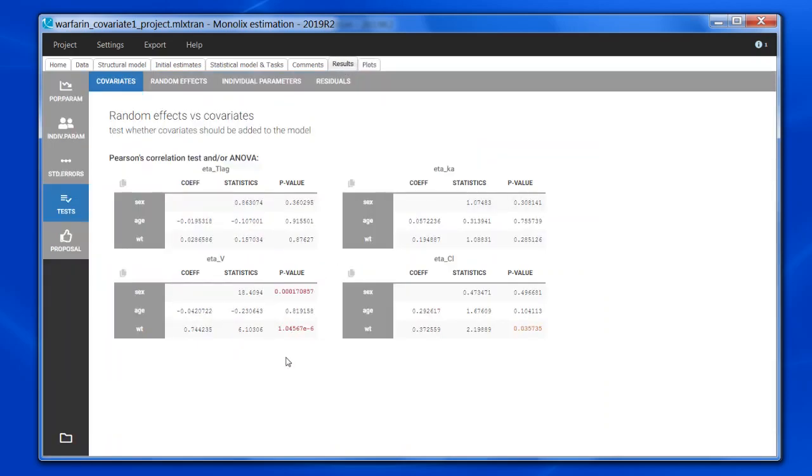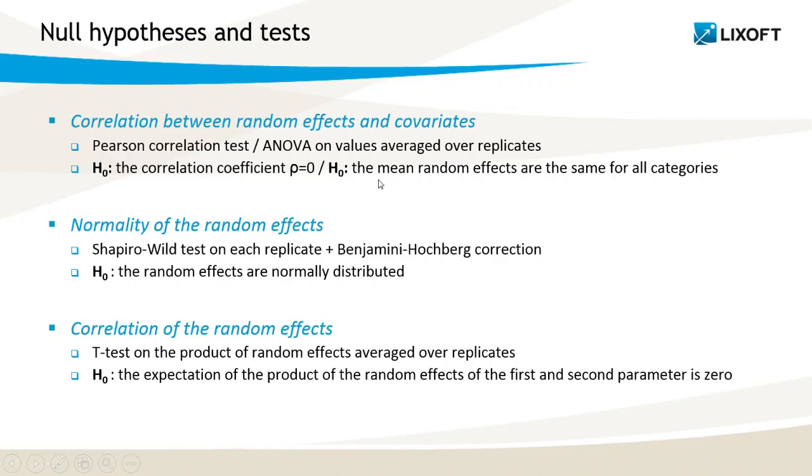So this was for the continuous covariates. For the categorical covariates, such as sex, the procedure is similar, except that we perform an ANOVA to test if the mean of etas for each category are equal. A small p-value indicates that all means are not equal, meaning that the etas of at least one category have an average significantly different from the others.